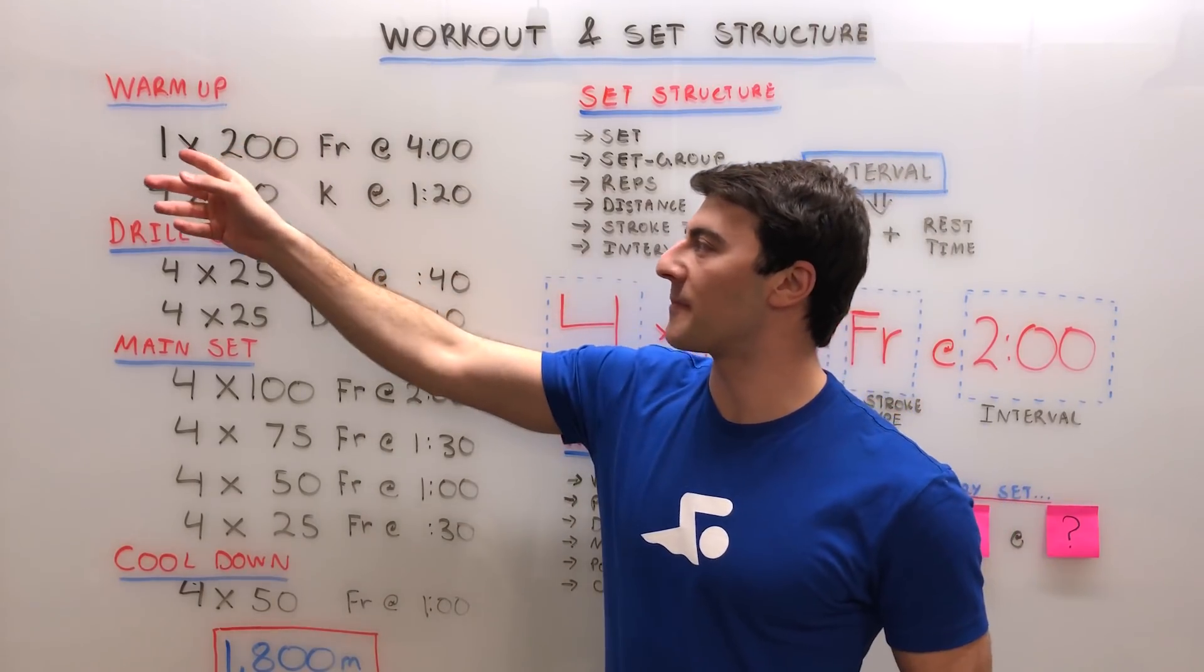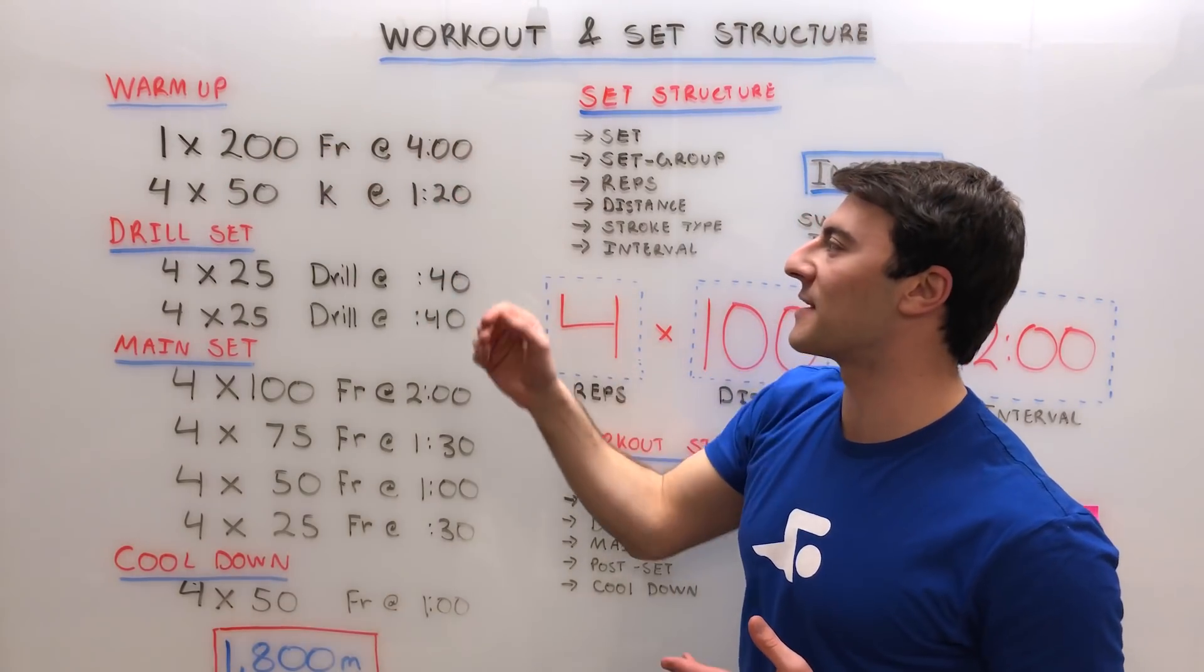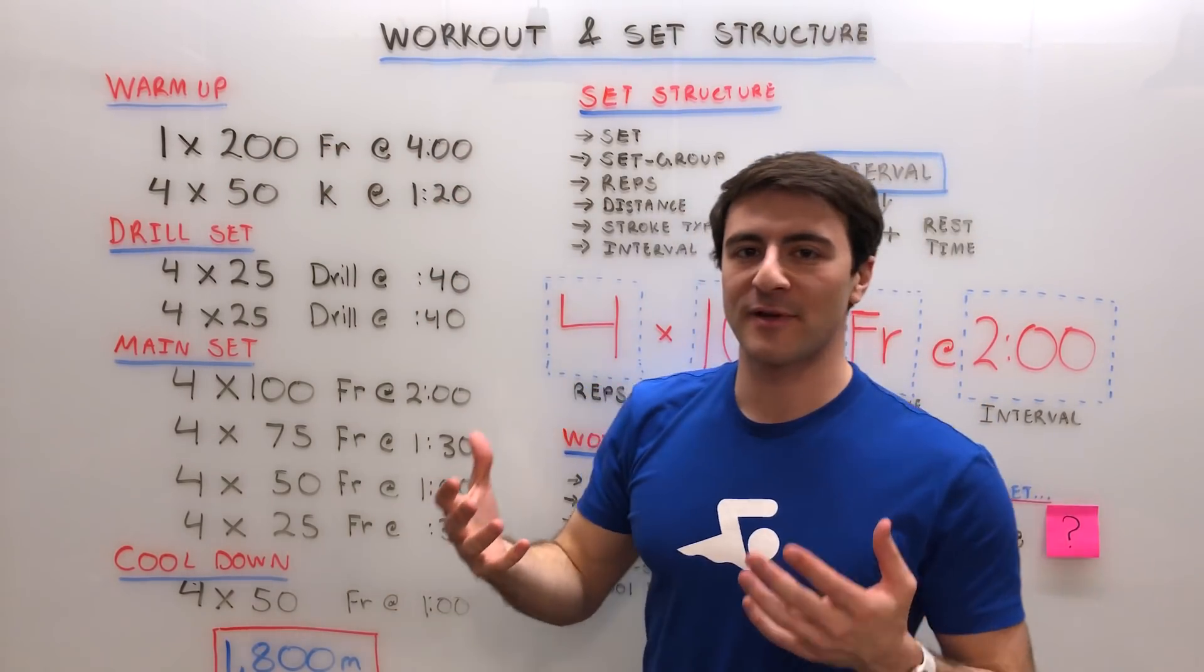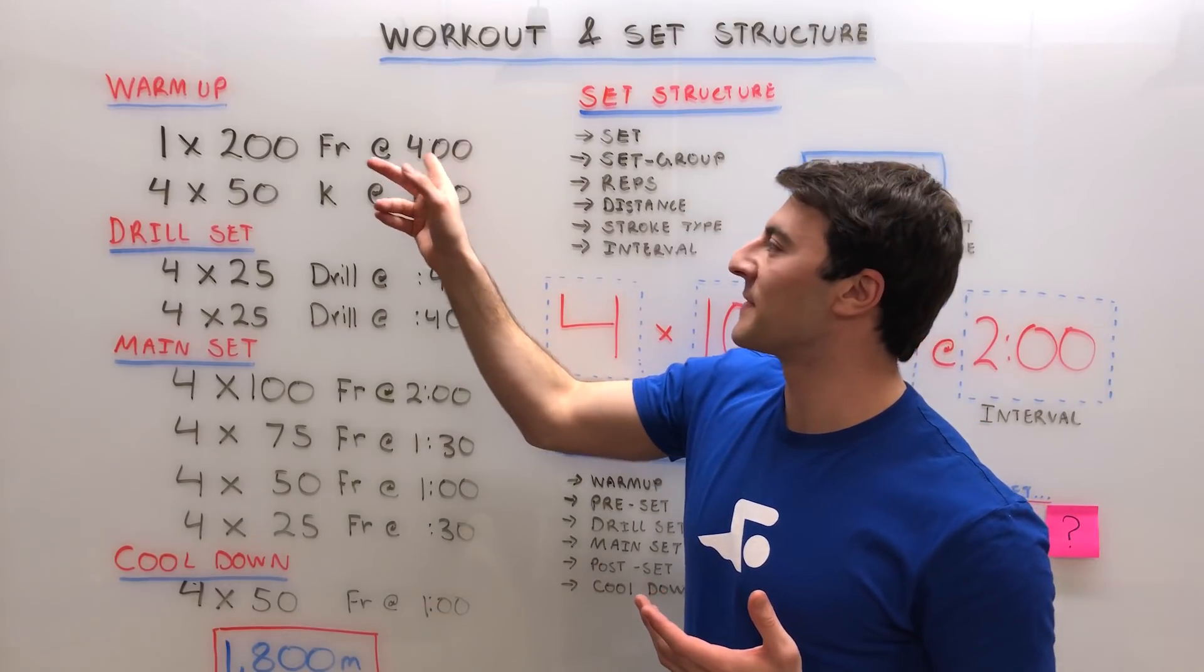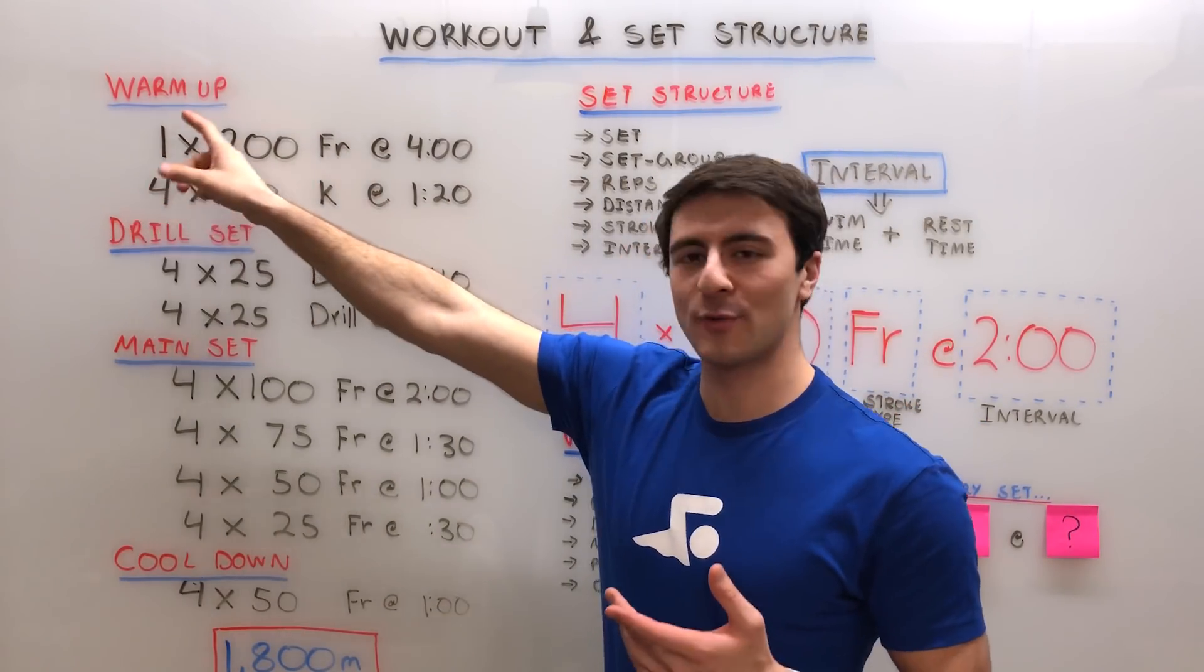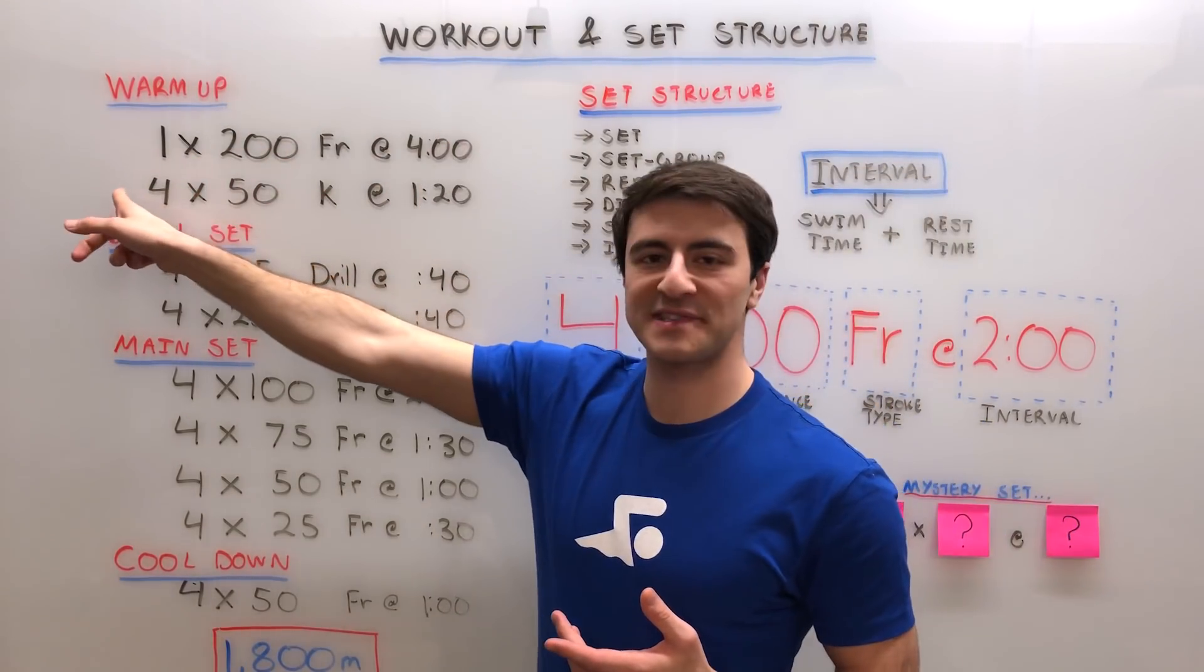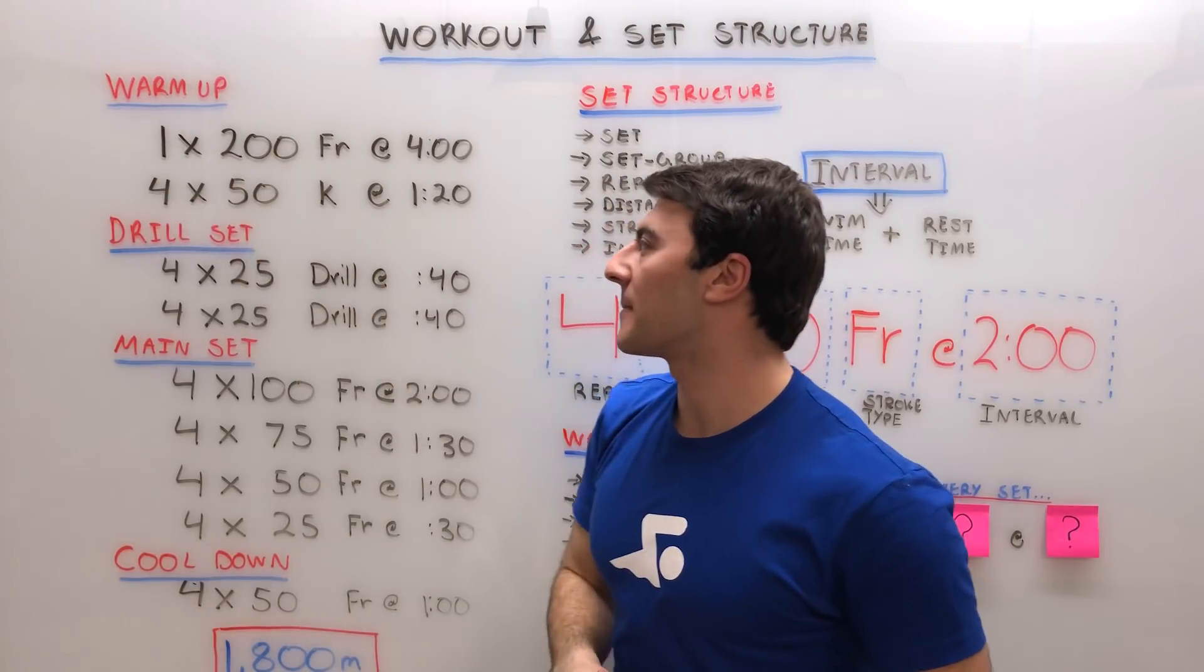If we look at the warm-up, starting out with 1x200 freestyle at four minutes. Now you might be thinking to yourself, what's the point of an interval if you're only doing one repetition? The idea is after you do 1x200 at the four minutes, you would start the next set in the set group that is the warm-up.